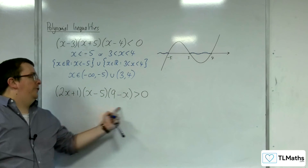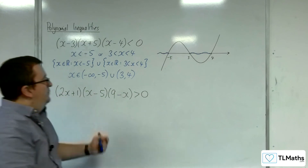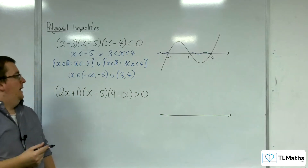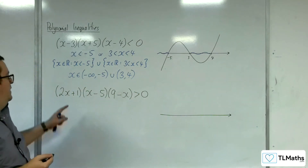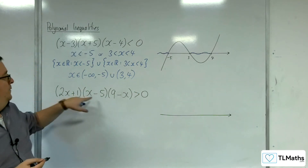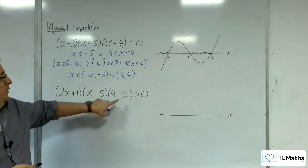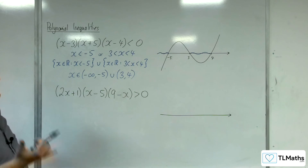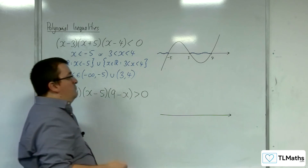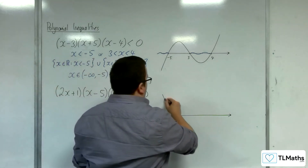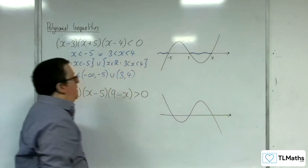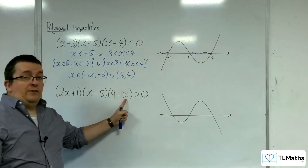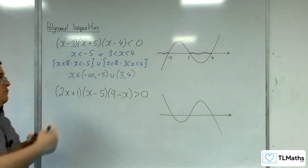Now for the second example, draw your x-axis. This is a cubic curve crossing through at minus a half, 5 and 9. Because of the minus x here, when you multiply everything out you get a minus x-cubed. That means it starts in the top left and works its way to the bottom right, so the curve looks the other way around.